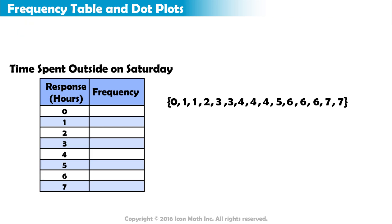For example, only one person responded that they spent zero hours outside, so the frequency of the response zero hours is one. Two people said they spent one hour outside, so the frequency of the response one hour is two.